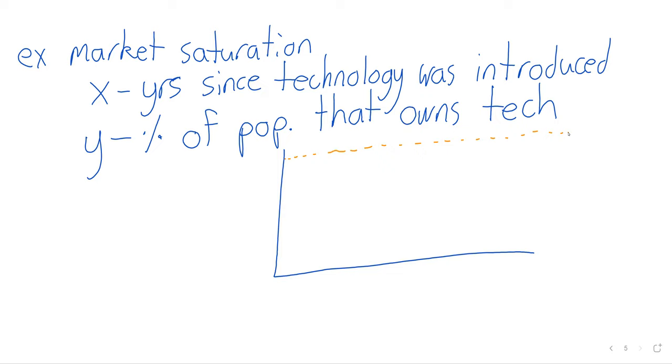But at this point, probably everybody who wants a smartphone and can afford a smartphone pretty much has one. So the number of people who own this new technology is more or less just sitting still at some market saturation level. It's not really increasing, not really decreasing. It's just sort of approached some number and then sits there.